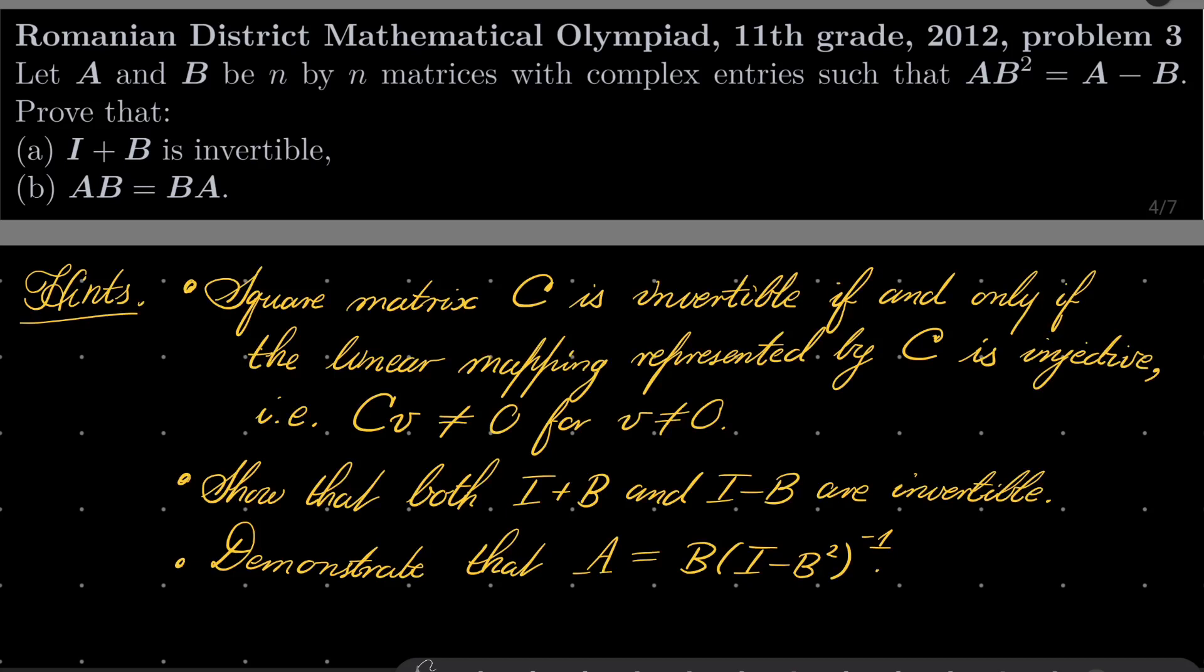First, notice this fact that a square matrix C is invertible if and only if the linear mapping represented by this matrix is injective, which means that C times some non-zero vector should be non-zero. If this is the case, our matrix is invertible. Again, that works only for square matrices, but we are dealing with square matrices in this problem.